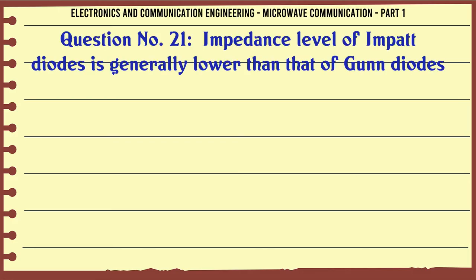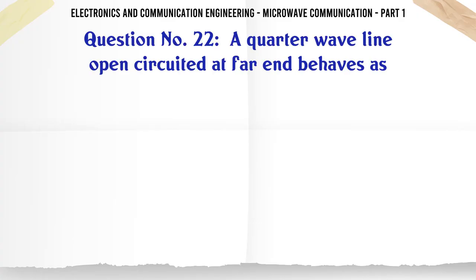Impedance level of impactor diodes is generally lower than that of gun diodes: A. True, B. False. The correct answer is True.